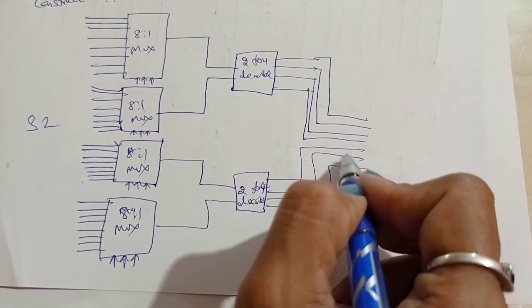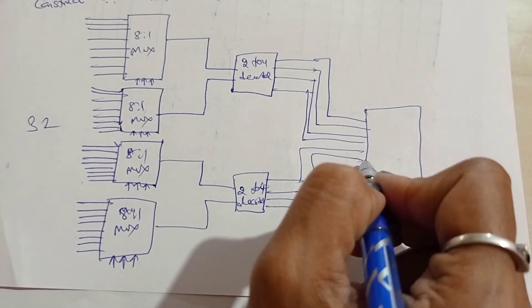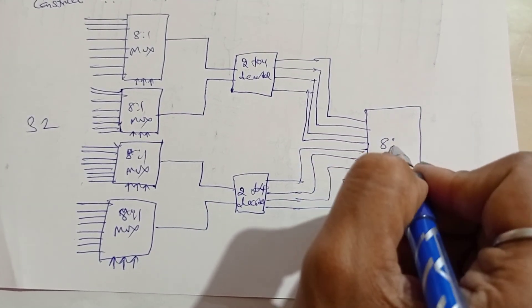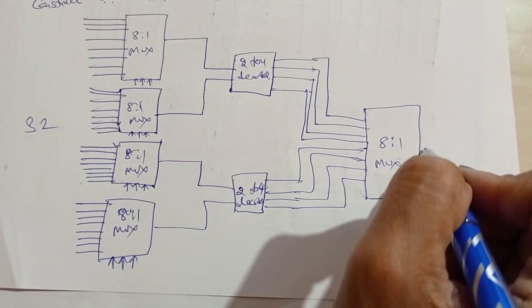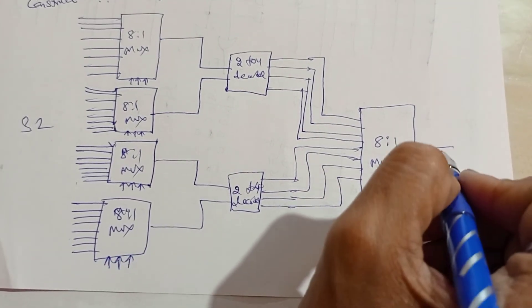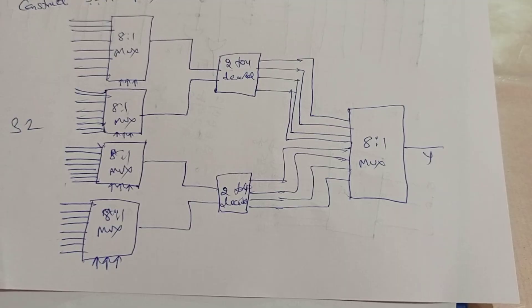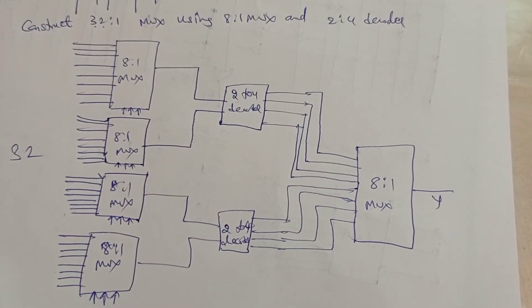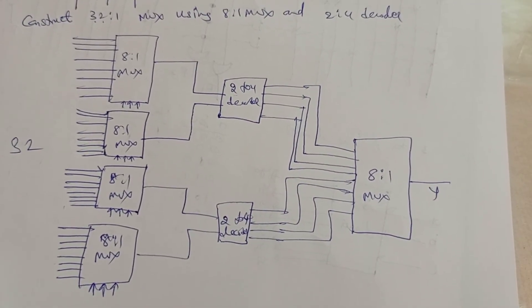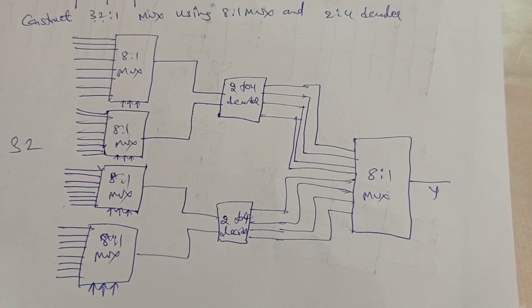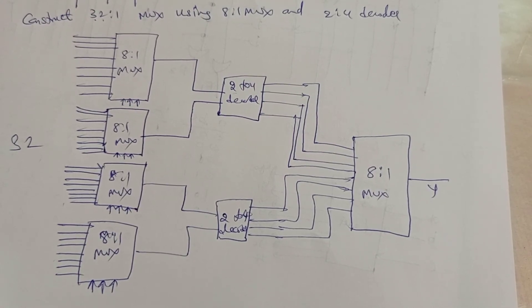With 8 inputs per MUX and four MUX units connected, the final output is Y. This is how to design the 32 is to 1 MUX using 8 is to 1 MUX and a 2 is to 4 decoder.